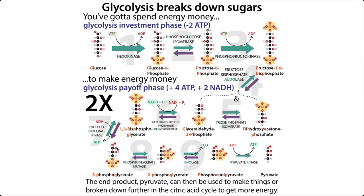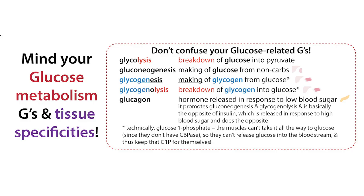Here's a quick review of glycolysis and gluconeogenesis. Glycolysis is the breakdown of glucose to give you pyruvate, and gluconeogenesis is the making of glucose from non-carb sources, but from pyruvate.